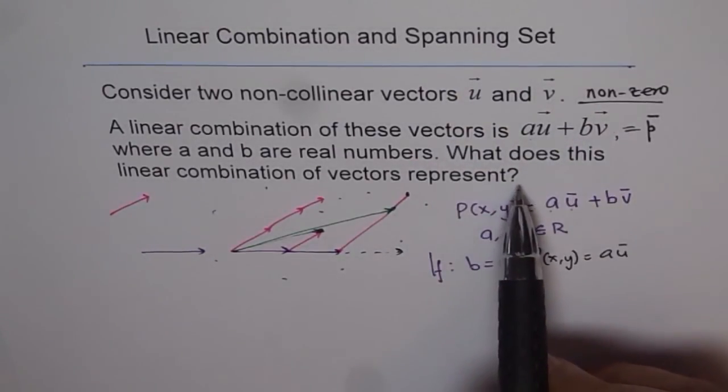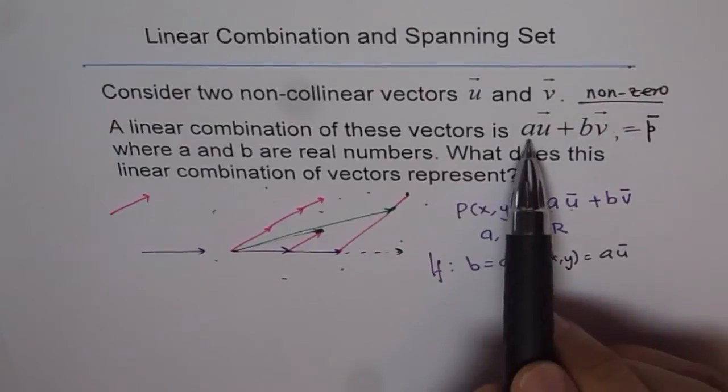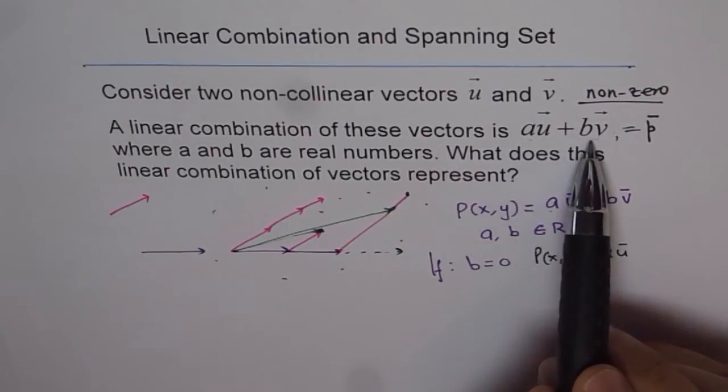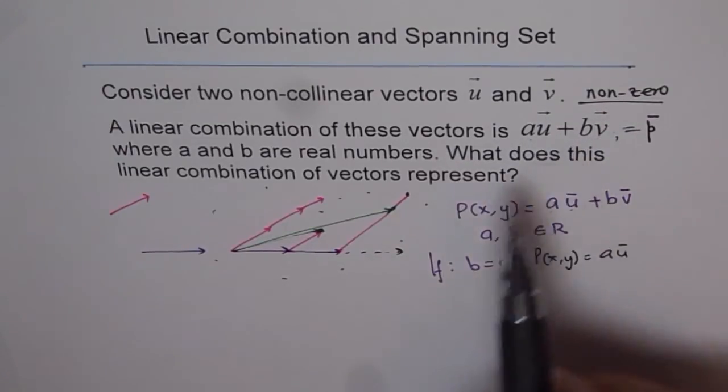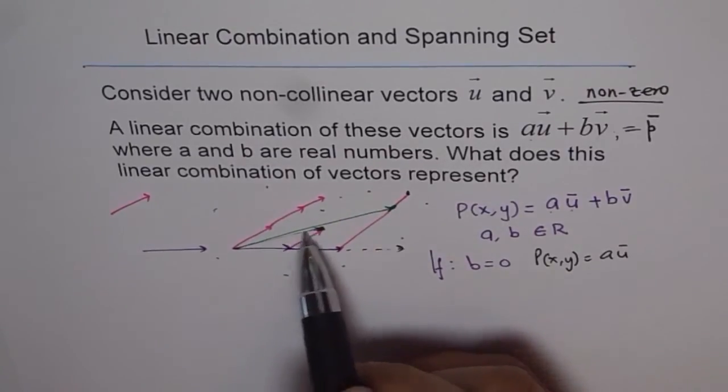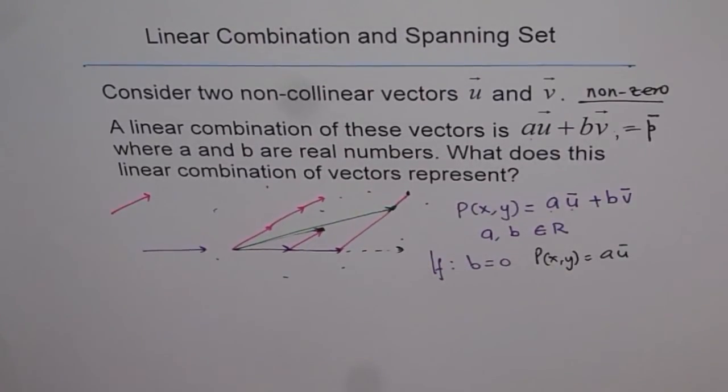u and v will be called spanning set. And this term, adding, is called linear combination. Like this is the linear combination to get the third vector. That is what we are going to explore more in these set of videos.